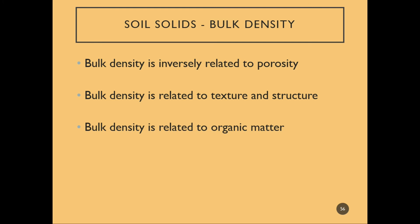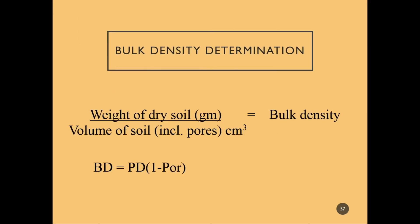Bulk density is related to texture and structure, and to organic matter content. The equation for bulk density is the weight of dry soil divided by the volume of soil including pores, equals bulk density. Another useful form: bulk density equals particle density times 1 minus porosity.